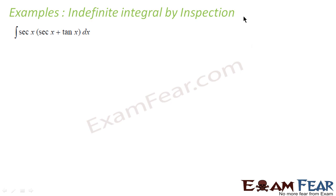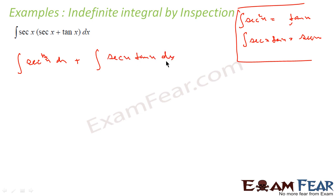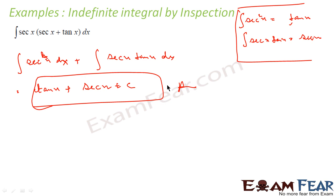To solve the next question we know additional formulas from reverse differentiation: the derivative of tan x is sec²x, and the derivative of sec x is sec x · tan x. So the integral of sec²x dx = tan x, and the integral of sec x · tan x dx = sec x. The answer is tan x + sec x + C.